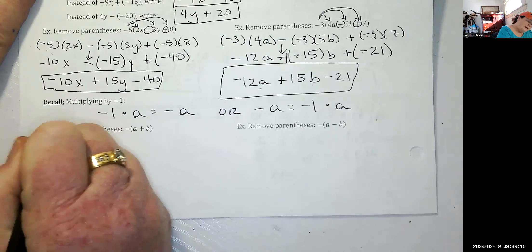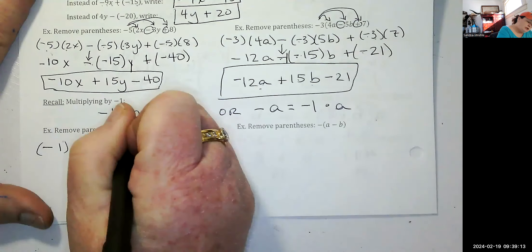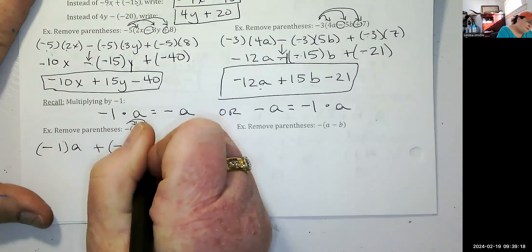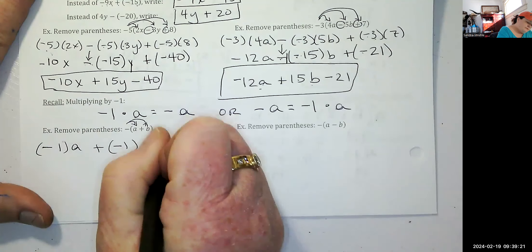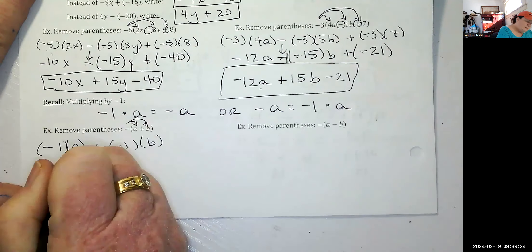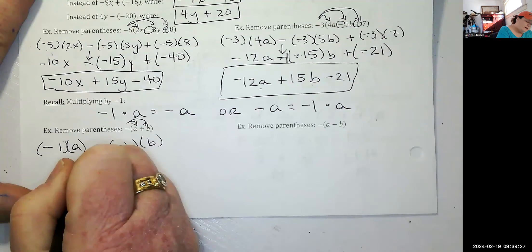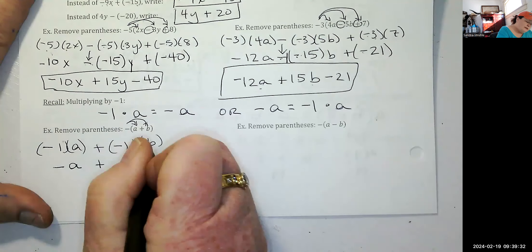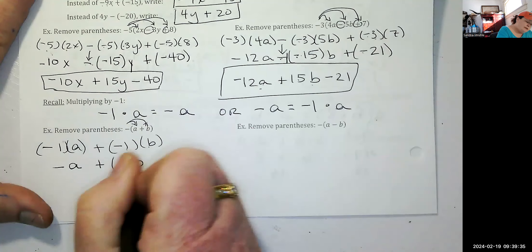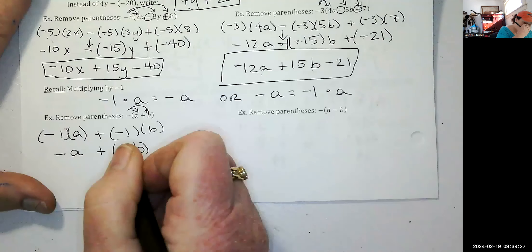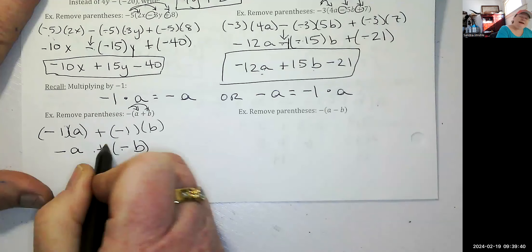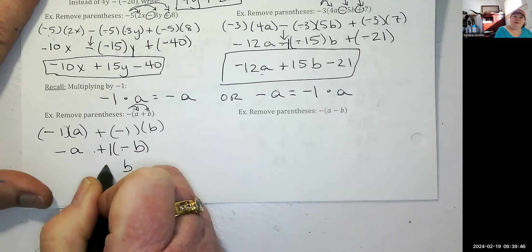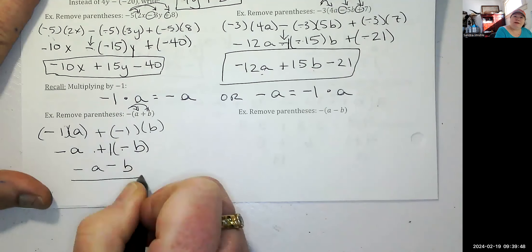So to remove parentheses from negative times the quantity A plus B: distribute negative one times A plus negative one times B. One times A is A, signs are different so it's negative A. One times B is B, signs are different so it's negative B. Result: negative A minus B.